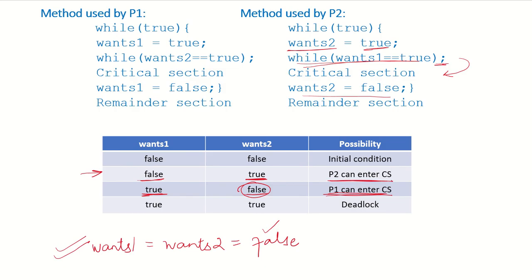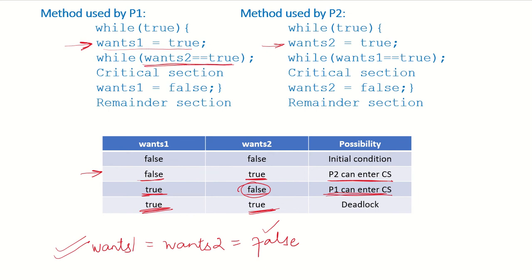Now let's consider P1 and P2 both running. P1 executes 'wants1 = true', then there is a context switch and P2 starts running and sets wants2 to true as well. Now P1 sees 'while wants2 is true' and keeps looping, unable to enter the critical section. Similarly, P2 sees 'while wants1 is true' and also keeps looping.